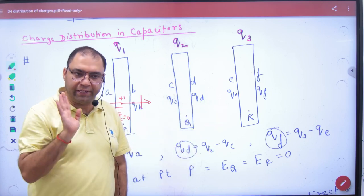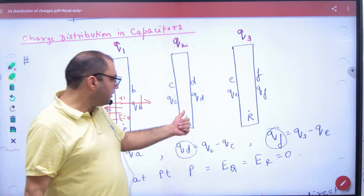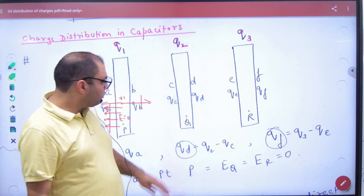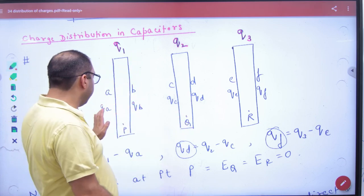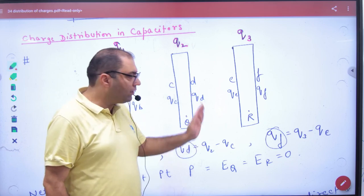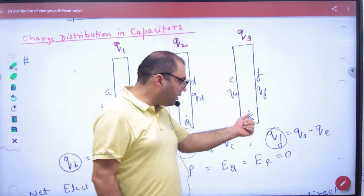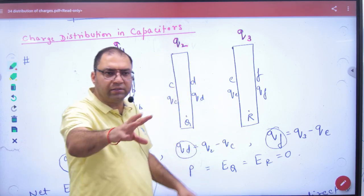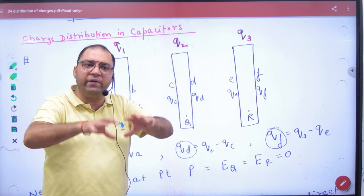Because sigma is charge upon area. Then same equation, we will do this. Here is E zero. Here is E zero. So these charges are 1, 2, 3. E right. And these are left. Here is E zero. Then here is E zero. After all these charges, we will do this.